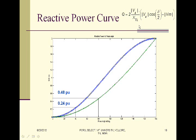Next, we will discuss the reactive power curve. The reactive power equation with shunt compensation is shown here, and the reactive power versus phase angle curves are drawn. The blue color line shows without compensation and the green color line shows with shunt compensation. At the same phase angle of 40 degrees, without compensation we get 0.24 per unit of reactive power, but with shunt compensation at 80 degrees we achieve around 0.48 per unit.